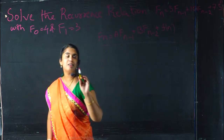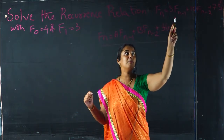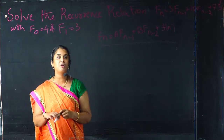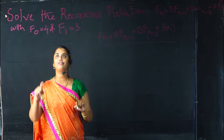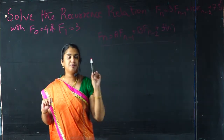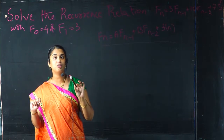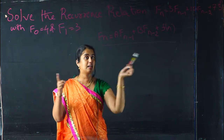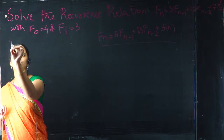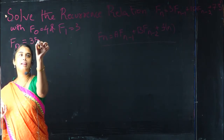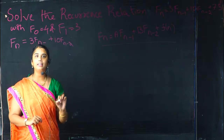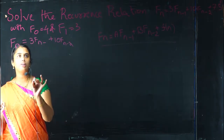The problem is: given the recurrence relation F(n) = 3·F(n-1) + 10·F(n-2) + 7·5^n, with initial conditions F(0) = 4 and F(1) = 3, find the solution. We will go step by step — first find the homogeneous solution, then the particular solution, and finally combine both to get the overall solution.